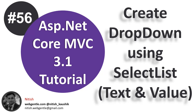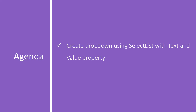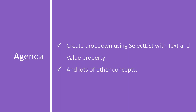Welcome again to ASP.NET Core MVC Tutorial. In this video we will learn how to create a drop down by using SelectList, but we will make some changes to our list. This time we will be using a complex list which will have some text properties and for each text property we will have a corresponding value property. We need to create a drop down using SelectList with text and value properties.